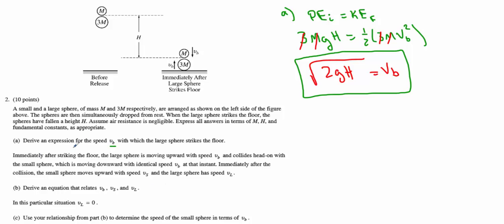Part B: immediately after striking the floor, the large sphere begins to move up with speed VB and collides head-on with the small sphere moving down with the same speed VB. Immediately after the collision, the small sphere moves up with speed VS and the large sphere has speed VL. We want to derive an equation relating VB, VS, and VL. This is a traditional momentum problem.